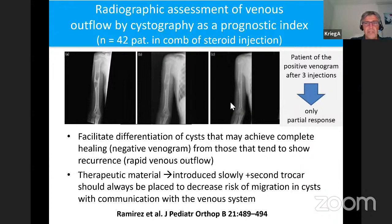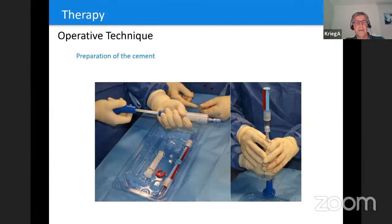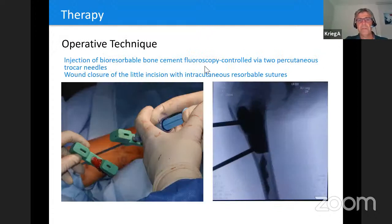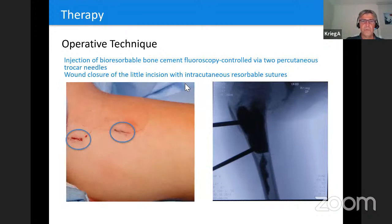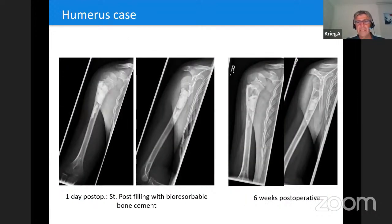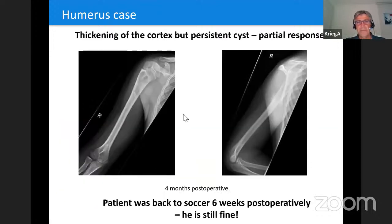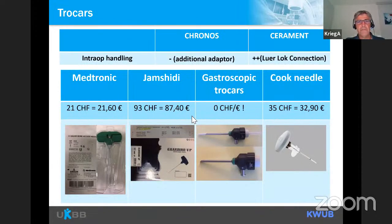Preparation of the cement, then injection of bioresorbable bone cement controlled via two percutaneous trocars — only when the cement starts to harden do I apply it, to make sure no cement enters the veins. One closure after the incision with intracutaneous resorbable sutures. As shown, four months post-operatively there is still a radiolucent area but better periosteal thickening, and the child is playing football again after six weeks. For trocars, I use the cheapest available — you can use gastroscopic trocars from visceral surgeons, though they may not appreciate that.